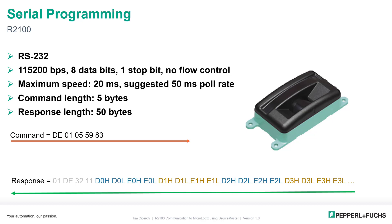You can see the command here. The five-byte command in hex is DE 01 05 59 83, and then the 50-byte response. It has a four-byte header — 01 DE 32 11 — and then comes the beam information. You get two bytes which is the integer distance information, labeled D0, and two bytes for the strength of the beam information, labeled E0. Then it just repeats: beam 0, beam 1, beam 2, beam 3, all the way through beam 11. Just that simple.